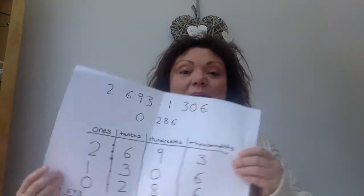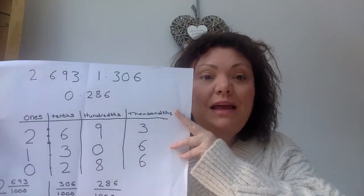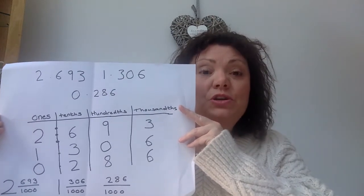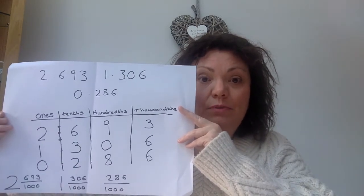I've got a bit of an example here. They're the numbers that are used on the White Rose video and they're showing you visual representations. Instead of going over that, I just want to go back to the place value chart, because that's the way we've looked at our decimals this year, and I know you did in Year 5 as well. So we've got three numbers here: 2.693, 1.306, and 0.286.